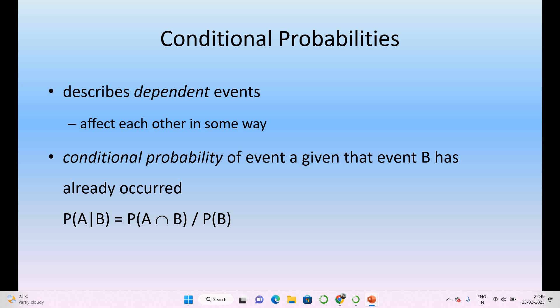What are conditional probabilities? Conditional probabilities describe dependent events. The conditional probability of A given that event B has already occurred is: P(A|B) = P(A ∩ B) / P(B). Conditional probability depends on dependent events and shows how they are dependent on each other.